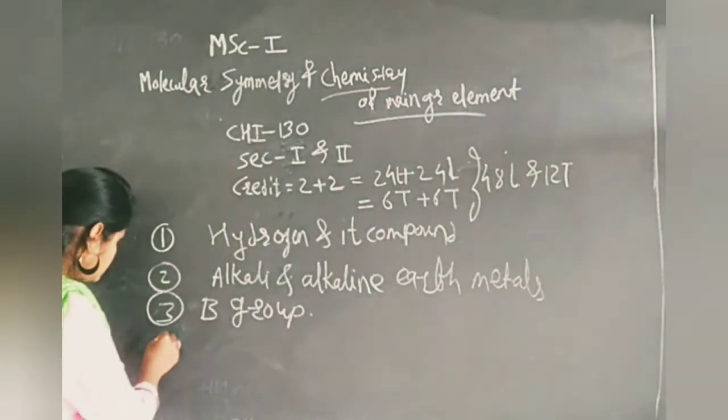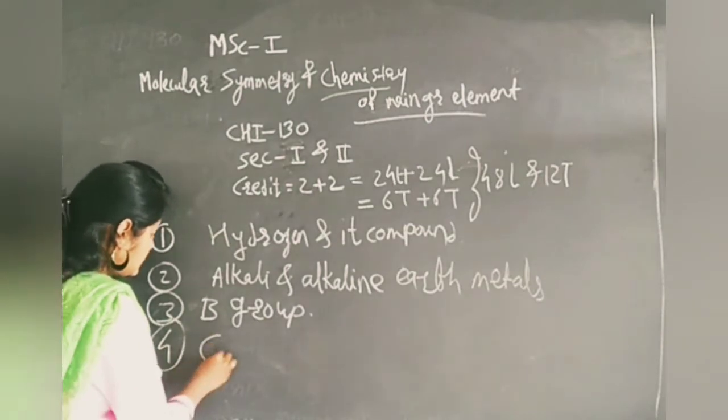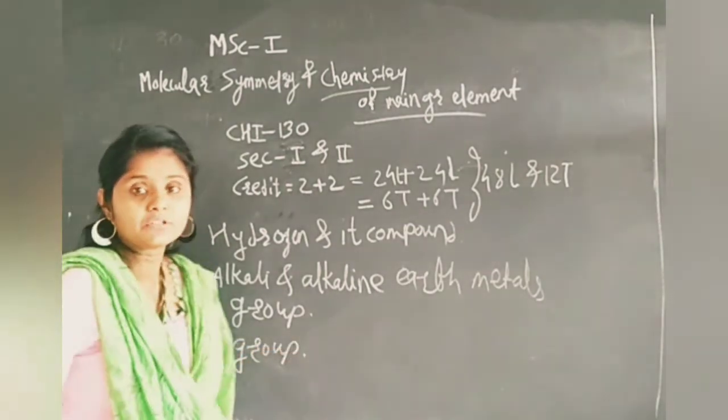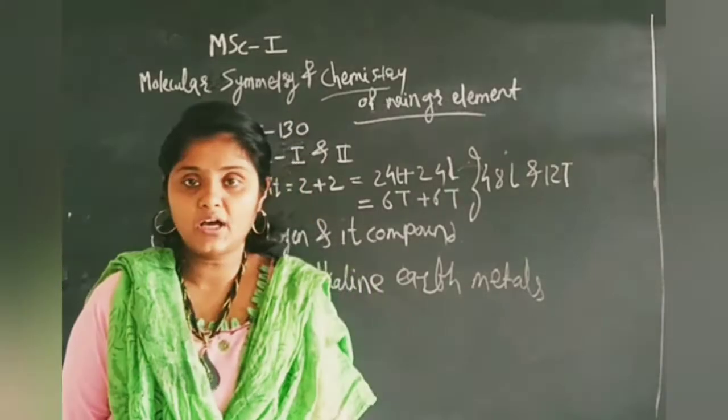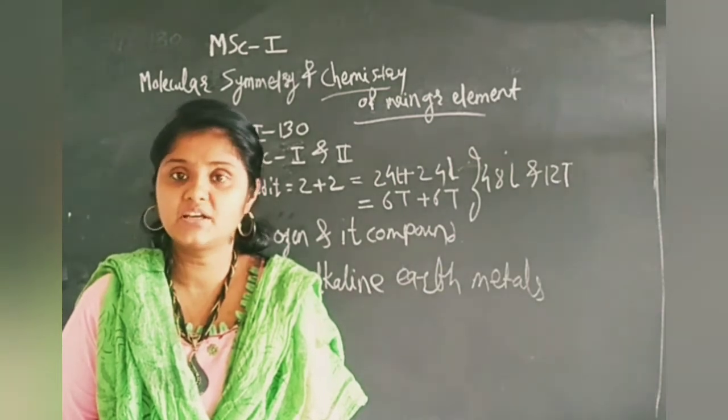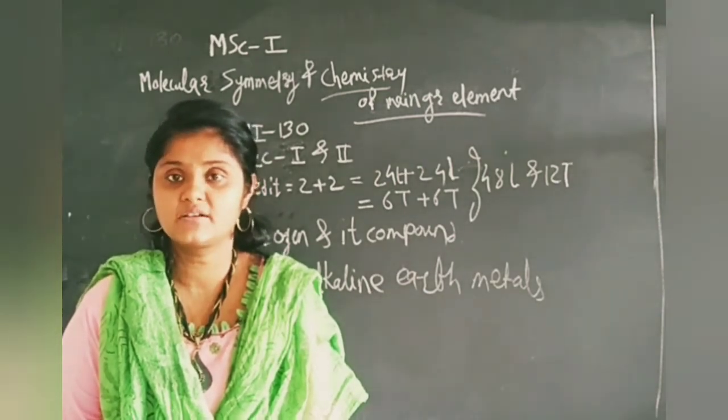Fourth one is carbon group. In carbon group, we are studying the allotropes of carbon. This you have already seen in 12th standard, but here in the advanced condition, we are studying those allotropes.